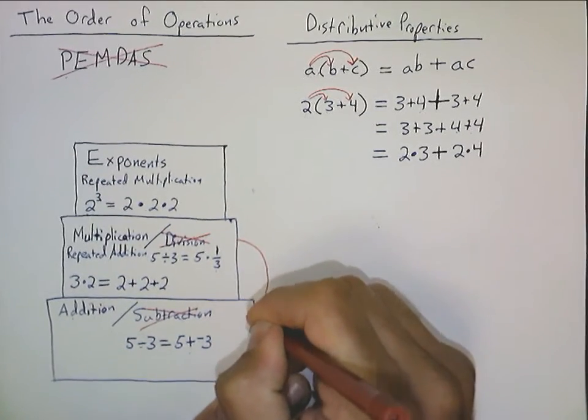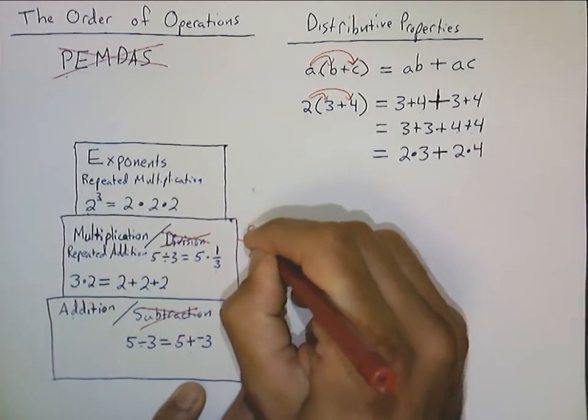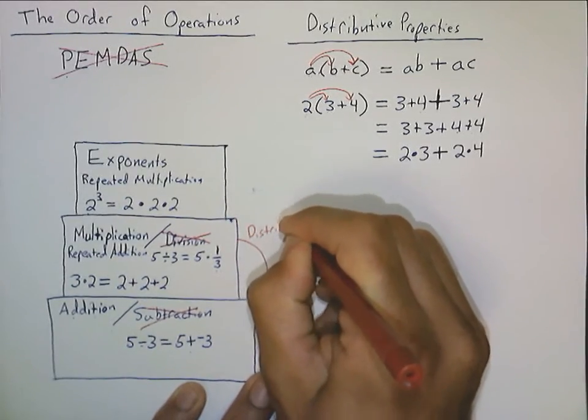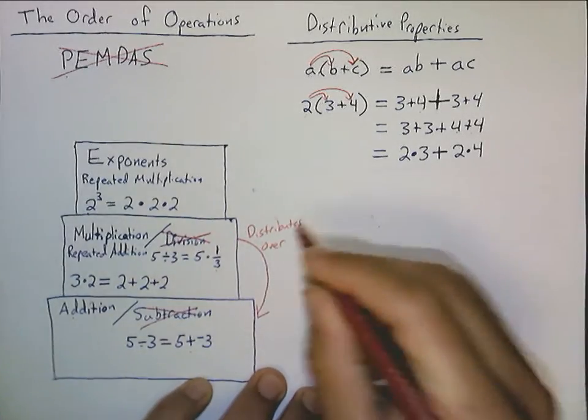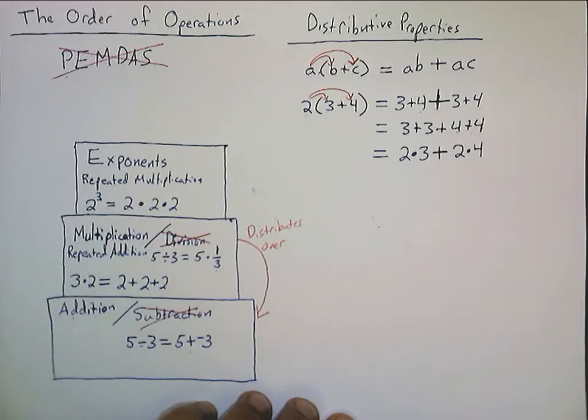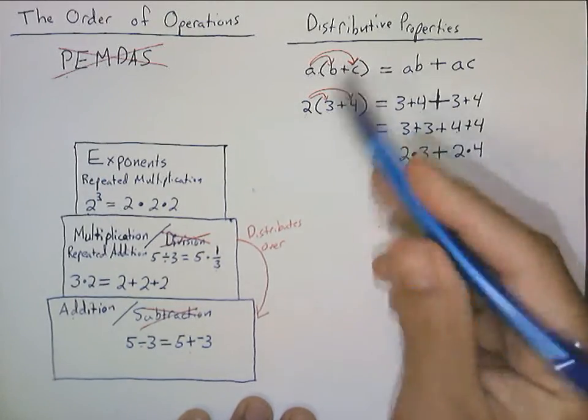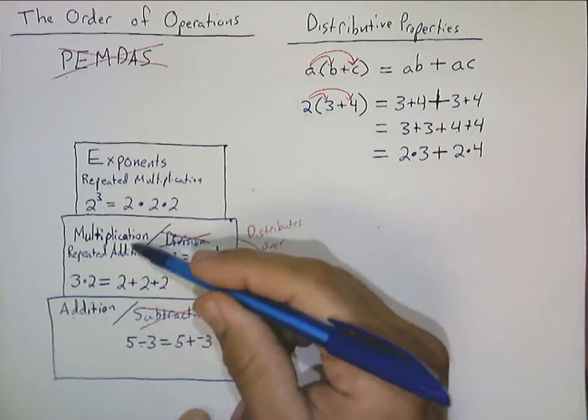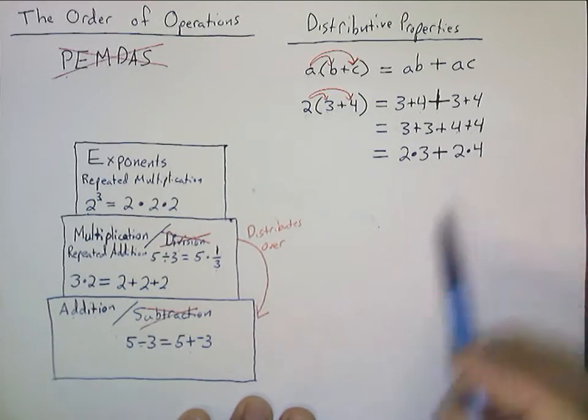So, I like to put into my picture this little arrow here saying that multiplication distributes over addition. This distributive property explains to us how multiplication and addition interact. And, it's not that hard to understand with a simple example just like this.